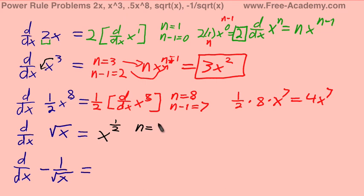So our n equals one-half, n minus 1 equals negative one-half. Once we know that, we can just plug everything straight back in. n, one-half, x to the n minus 1, which is negative one-half. And this simplifies to 1 over 2 square root of x.